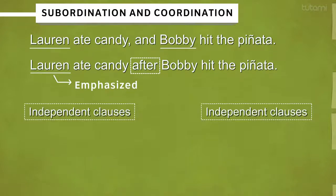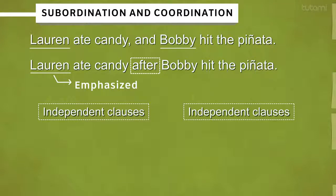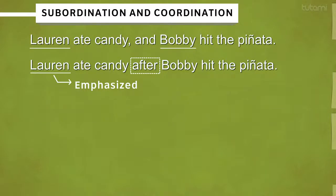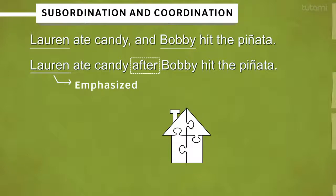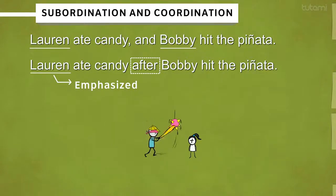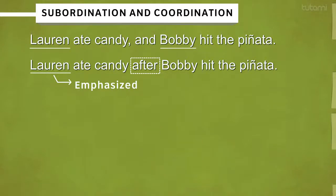When you have two independent clauses, many times they can be joined together using conjunctions like 'and,' 'after,' 'but,' 'for,' 'so,' and 'or.' Using conjunctions makes writing less choppy and provides information about when these activities happened in relation to each other. It also does something so subtle you may not notice — it makes Lauren's activity the focus of the sentence.